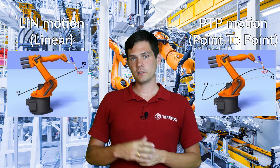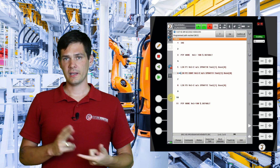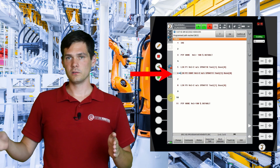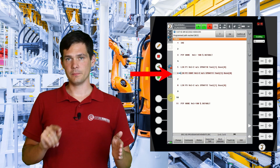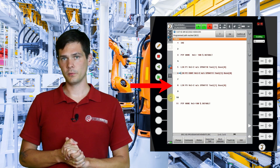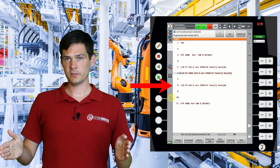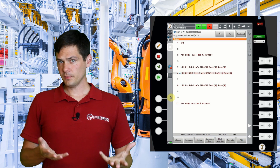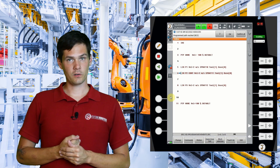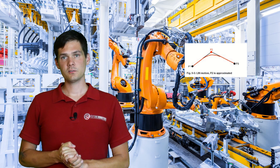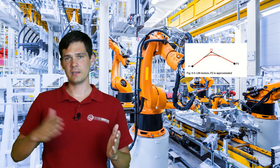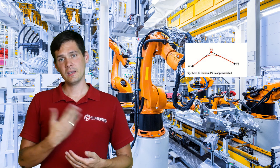There are two types of movement in KUKA: continuous motion and non-continuous motion. Continuous motion means the robot goes from point A through point B to point C without stopping at point B. Non-continuous motion means the robot will stop at the intermediate point. When using continuous motion there is something called approximation distance, which tells the robot how much it should round the motion in order to get from point A to point C while skipping point B.